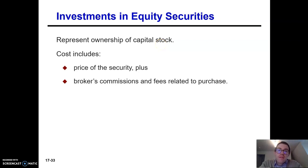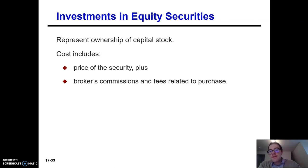Let's talk about how to account for investments in other companies. When your corporation buys the common stock of another corporation, you have an investment in equity security. The cost of that includes the price of the security plus the broker commission and any fees related to the purchase.